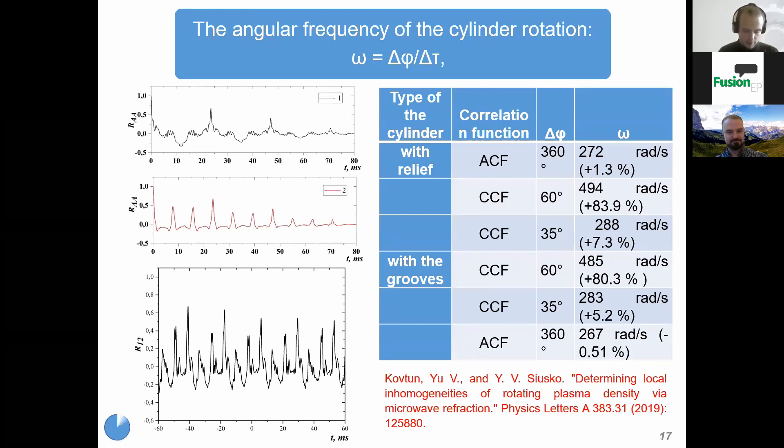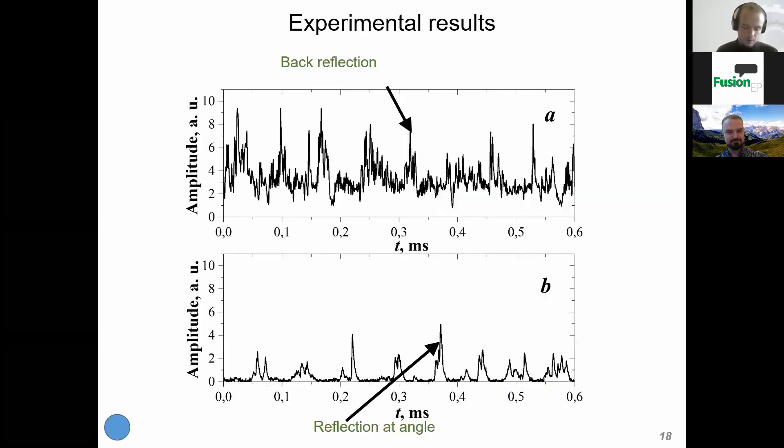To analyze the registered signal, we use the ACF and cross correlation function. This angular frequency is defined by this equation, where delta phi is the angular distance between the reception points. Delta tau is the time shift between the maximum of the CCF and ACF. We can notice that these signals have the same form as reflected from the cylindrical surface. So we can use the same procedure for determining the angular frequency for the plasma cylinder as for the mechanical model and thus to find the inhomogeneities and the angle of azimuthal displacement between them.